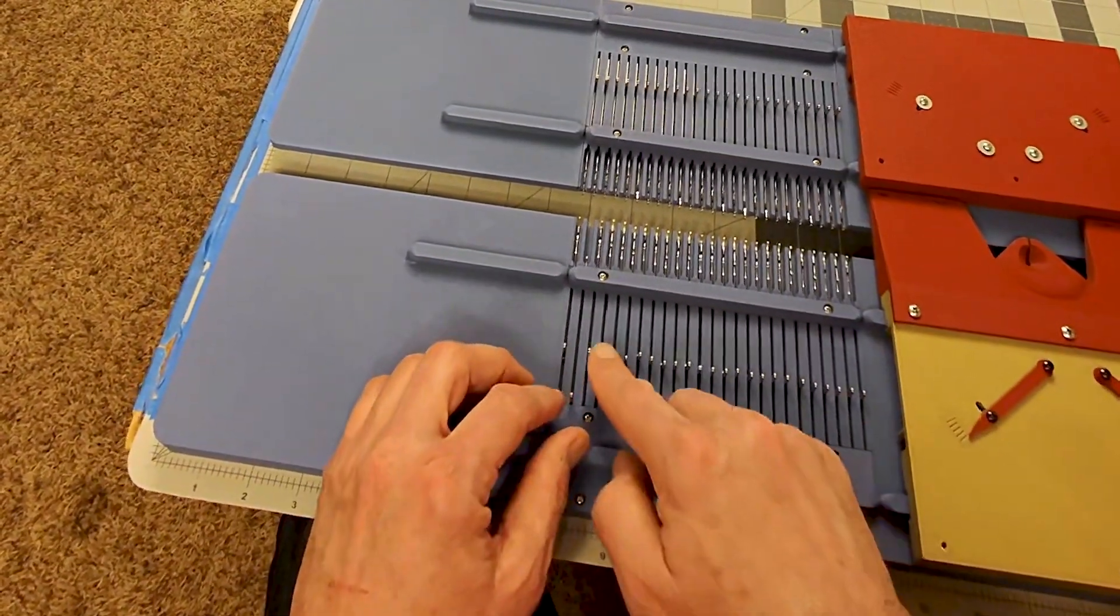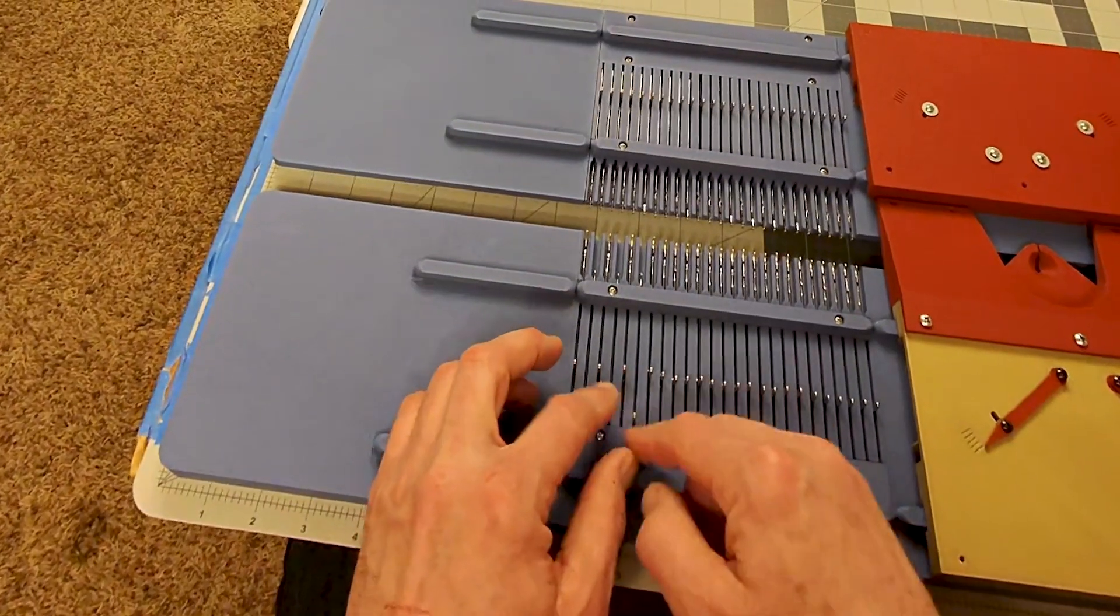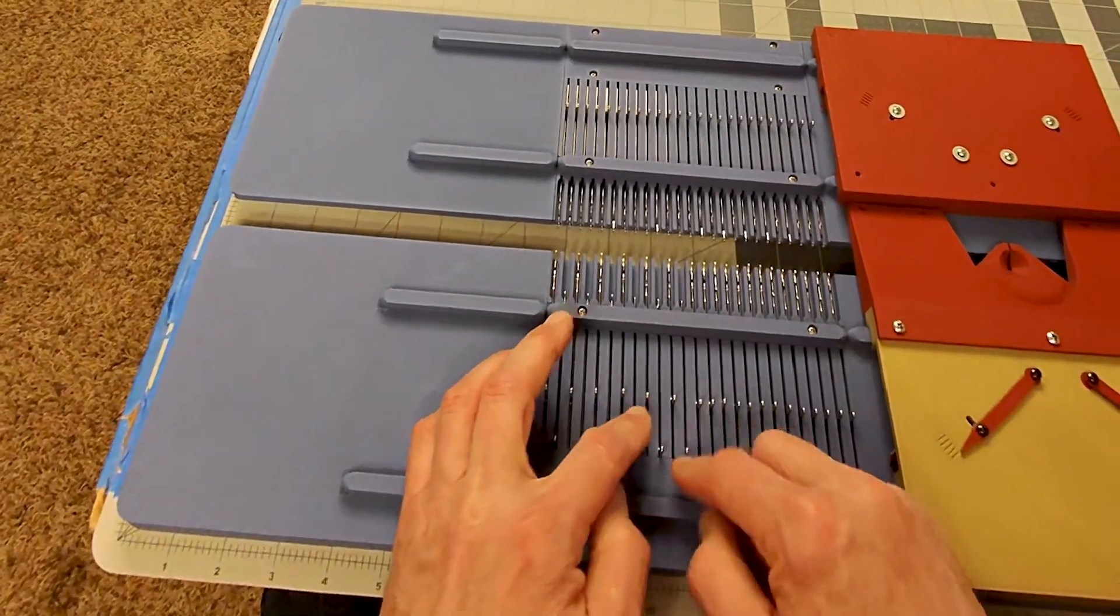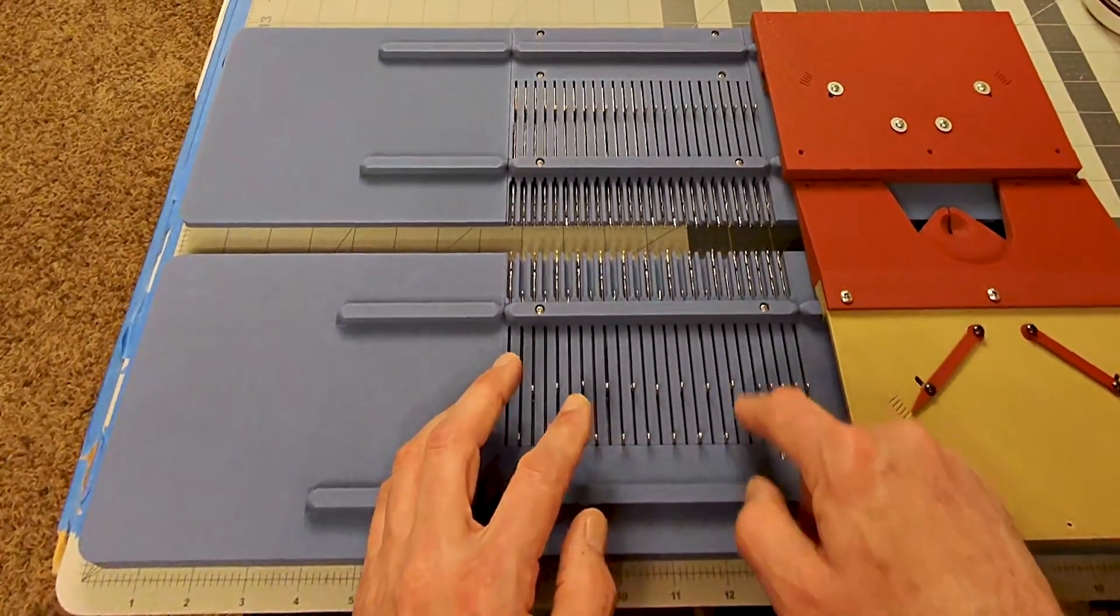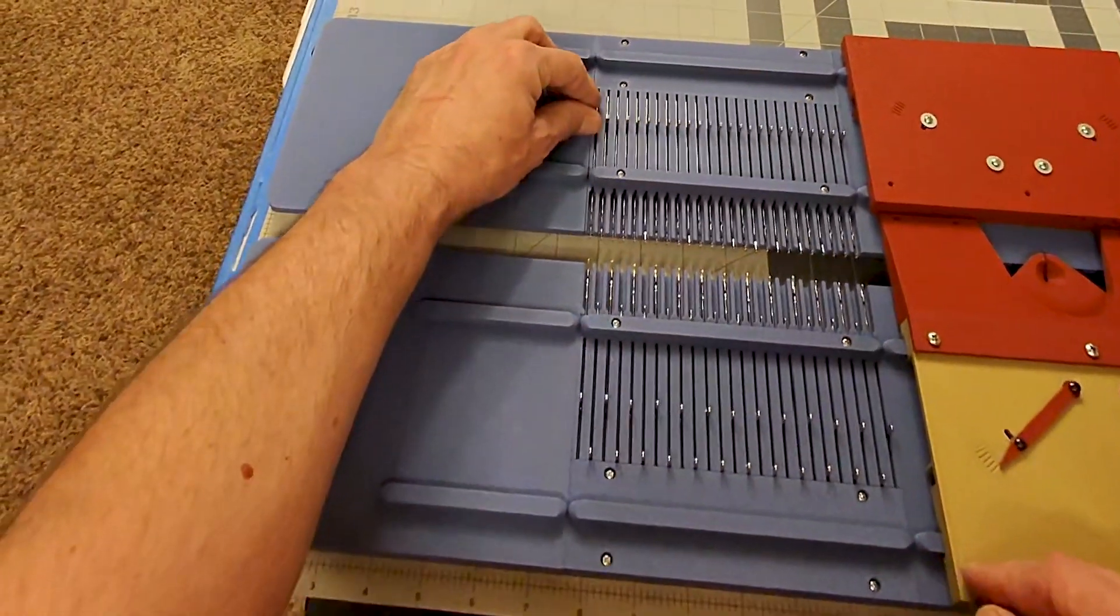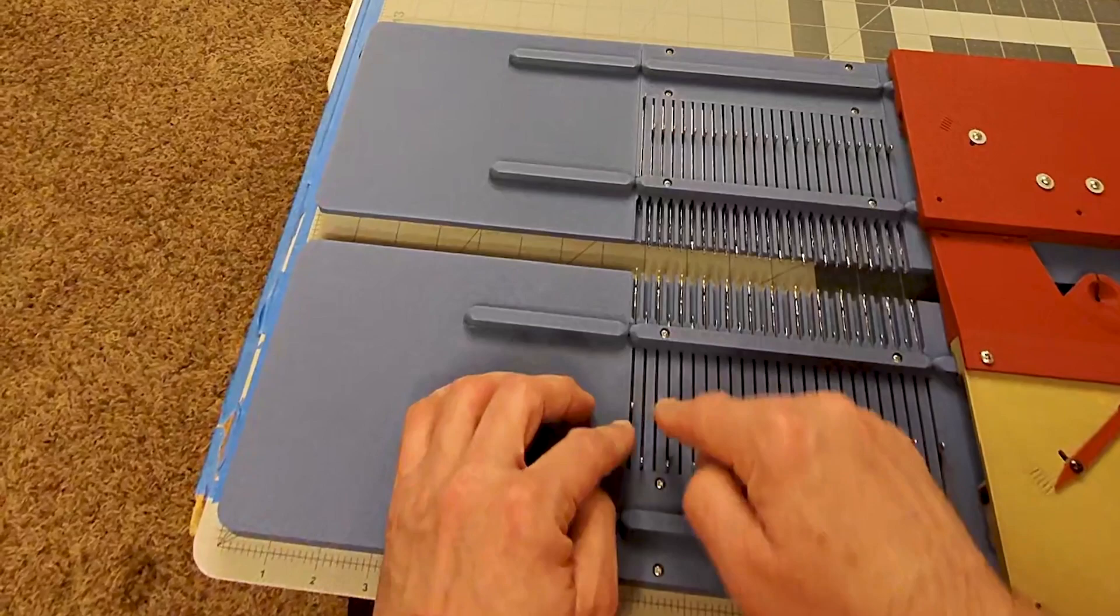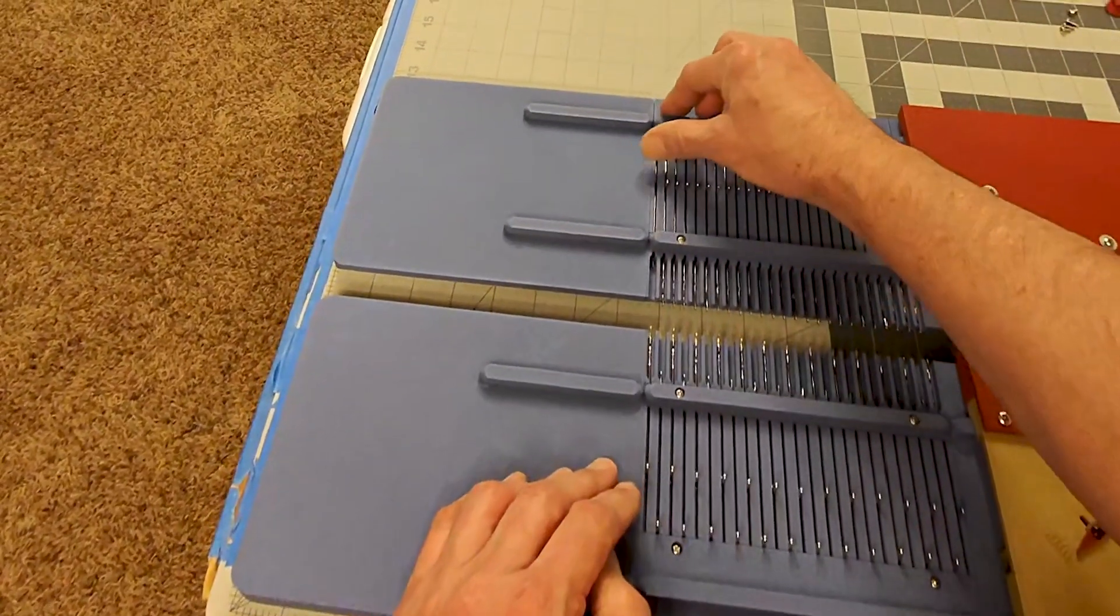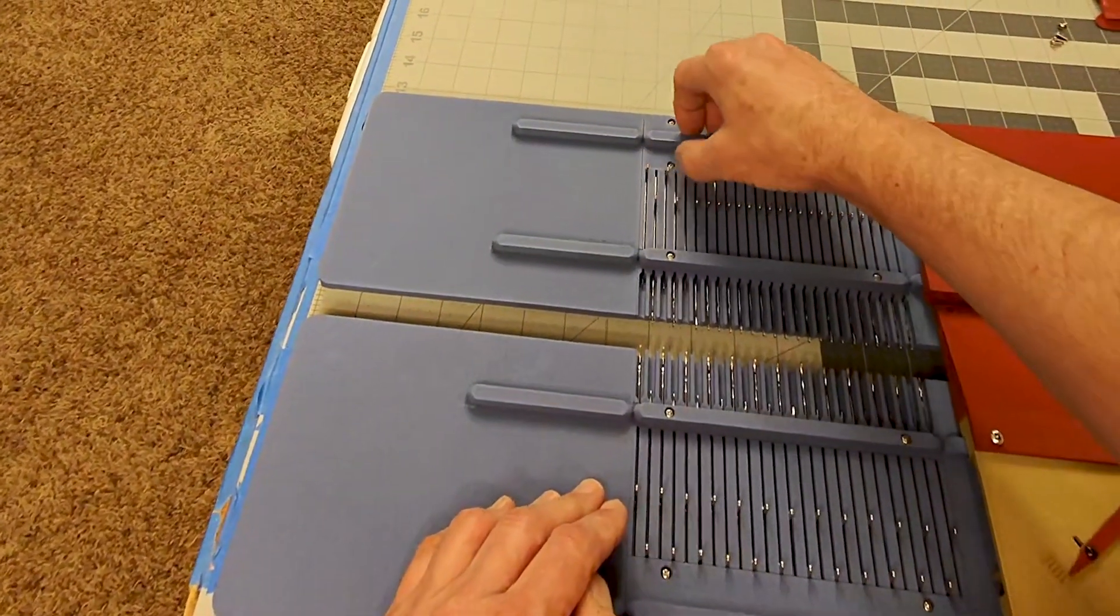All right, so the first thing we're going to do: we're going to pull every other needle into the non-knitting position, like so. And then we're going to do the opposite on the other side. So if this one's in the knitting position, this one's non-knitting.